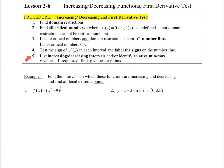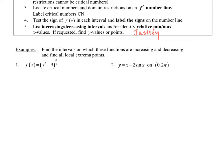Fifth, list increasing and decreasing intervals and identify relative min and max x-values if requested — find the y-values or the points. You also have to justify if it is a relative max or min by saying that f prime changes from positive to negative or negative to positive, depending on whether it's a relative max or relative min.